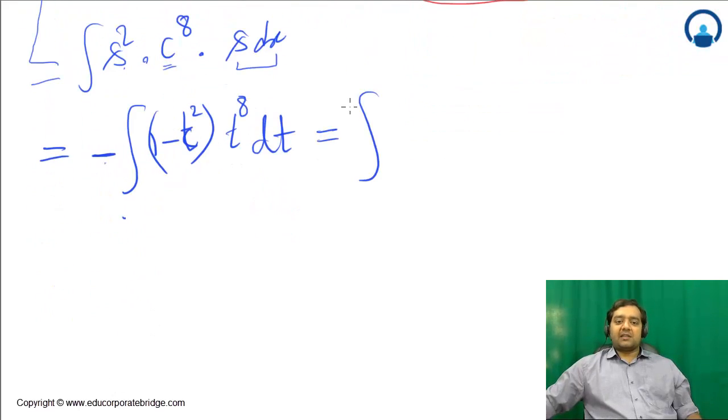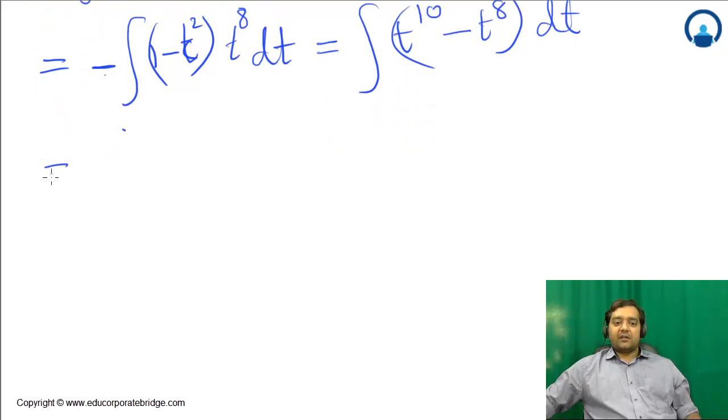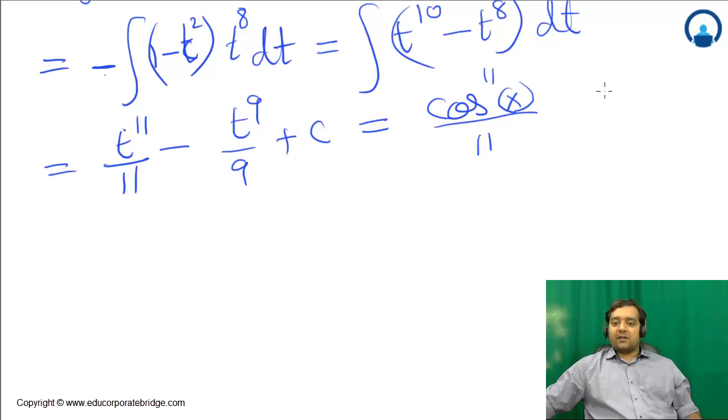This is the integration of -(t¹⁰ - t⁸)dt. Integration will be t¹¹/11 - t⁹/9 + C. Since t was cos(x), this is cos¹¹(x)/11 - cos⁹(x)/9 + C.